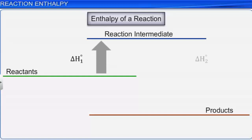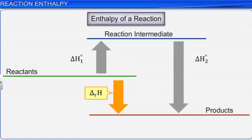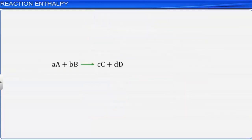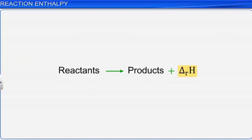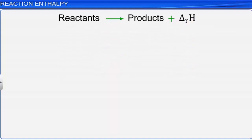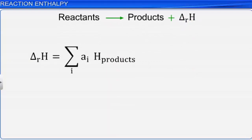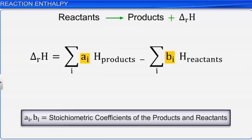The enthalpy change that accompanies a reaction is called reaction enthalpy or enthalpy of reaction, denoted by delta RH. The enthalpy of a reaction is defined as the amount of heat evolved or absorbed in a chemical reaction when the number of moles of the reactants, as expressed in the chemical equation, have completely reacted. Enthalpy of a reaction is expressed as the summation of enthalpies of products minus the summation of enthalpies of reactants, where Ai and Bi are the stoichiometric coefficients of the products and reactants respectively in the balanced chemical equation.